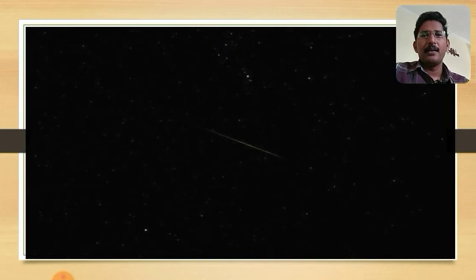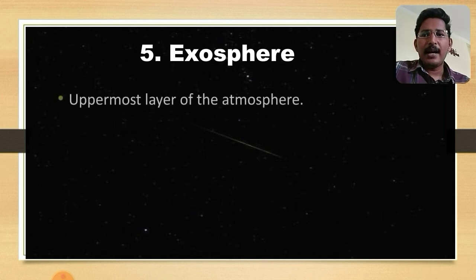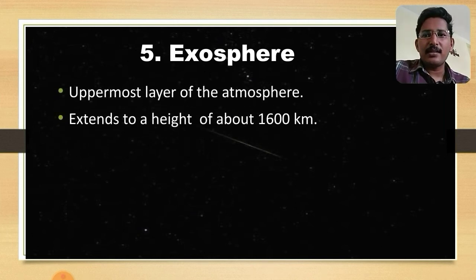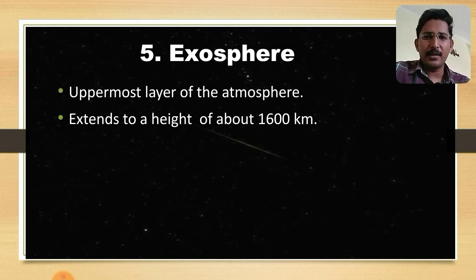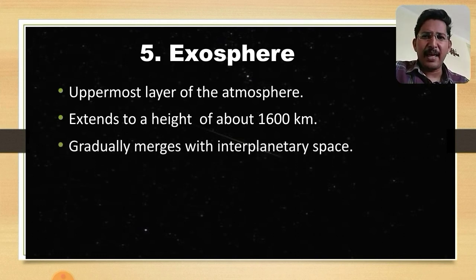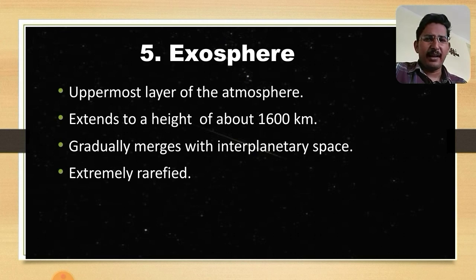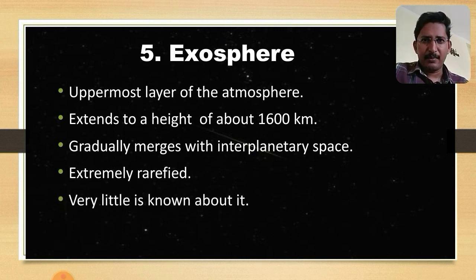The exosphere is the outermost layer of the atmosphere. It extends to about 1600 kilometers and gradually merges with interplanetary space. Very little mass is present here, and very little is known about this region.